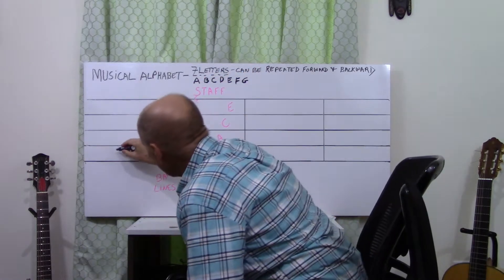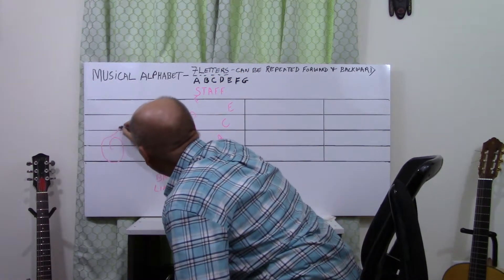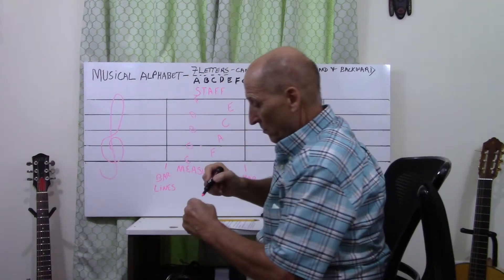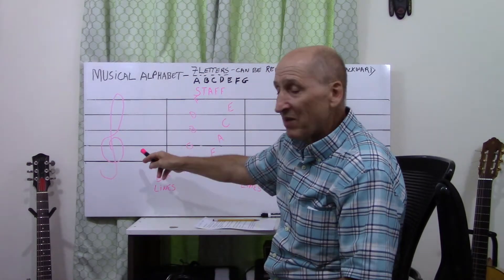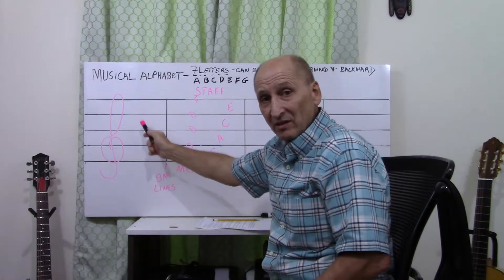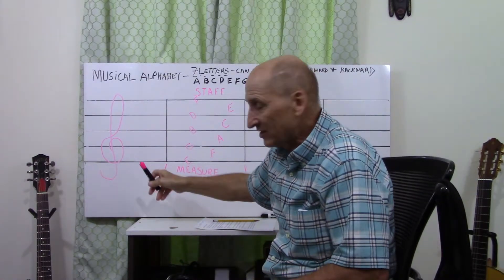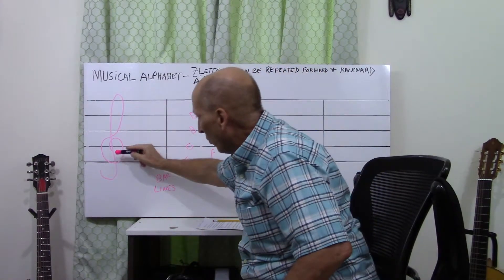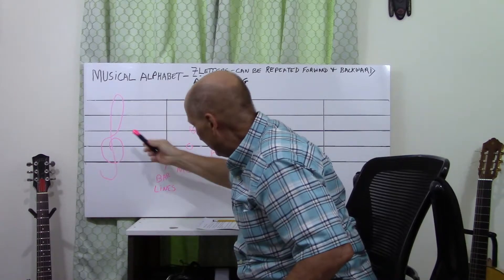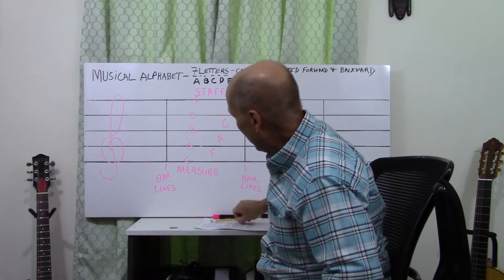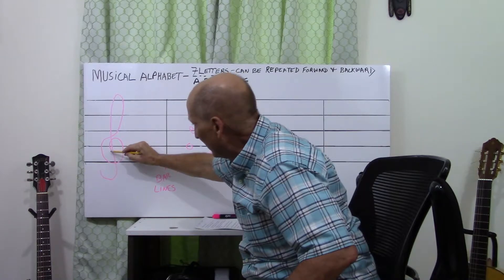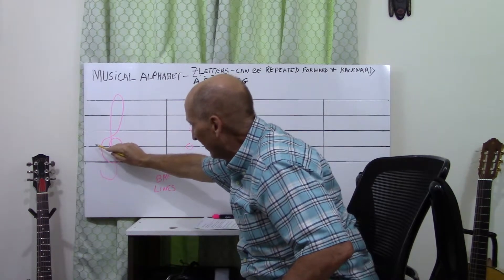G-clef. You might have seen this if you've seen a piece of music. It looks sort of like an S in cursive. When you make the clef, it crosses the second line.